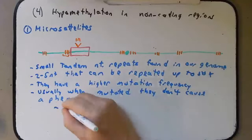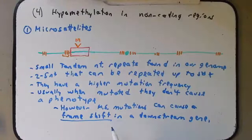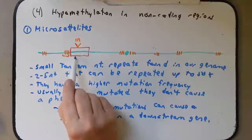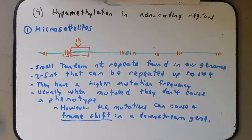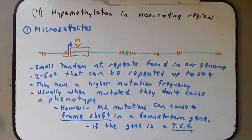However, sometimes microsatellites near genes can cause a phenotype. Microsatellite mutations can cause a frameshift in a downstream gene. Frameshift mutations are some of the worst mutations that can happen because they throw the entire reading frame of the gene off and lead to a non-functional product. So if that gene is a tumor suppressor gene, it would cause that gene to not be expressed. As long as the other allele is fine there shouldn't be a problem, but with one of them mutated this way, all it takes is for the other one to be mutated by some other mechanism to cause that step towards cancer.